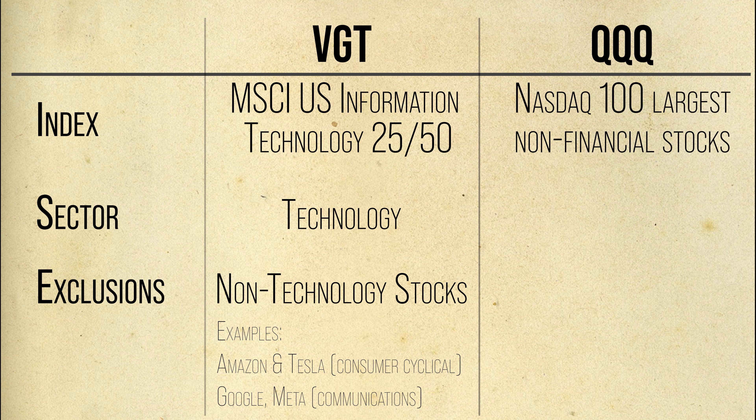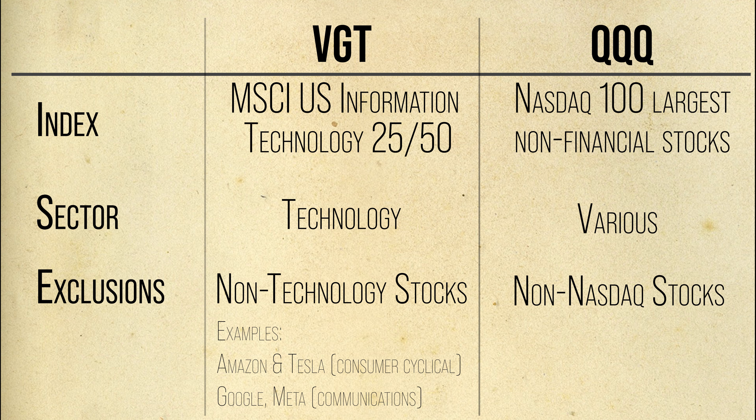QQQ tracks the performance of the NASDAQ 100 largest non-financial companies. This means that QQQ does not hold stocks traded on rival exchanges. For instance, QQQ doesn't have New York Stock Exchange-listed Oracle or Salesforce in its portfolio. We can argue that such an approach is arbitrary and restricts QQQ's opportunities.